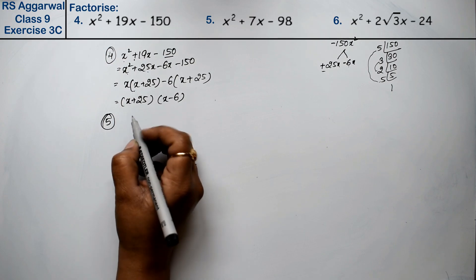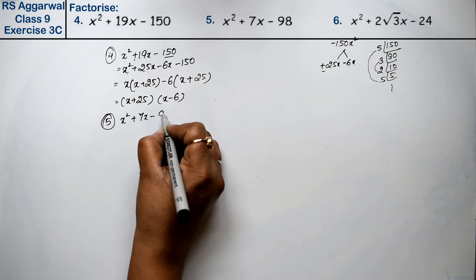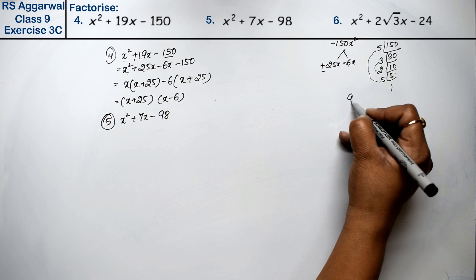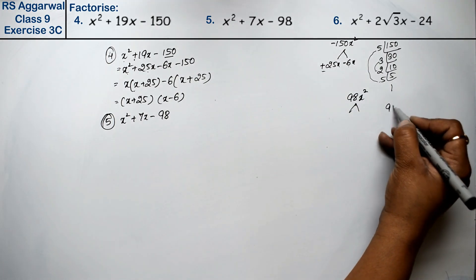Let's do question number 5. Question number 5 is x square plus 7x minus 98. Now if we multiply this with this, then it will be 98x square. Now let's take the factors of 98.